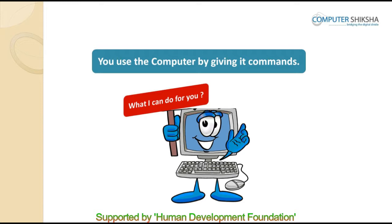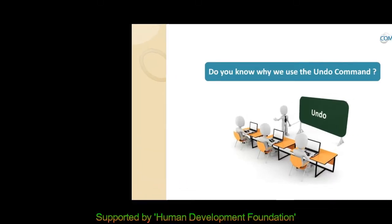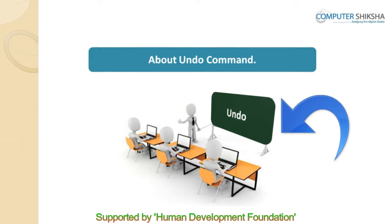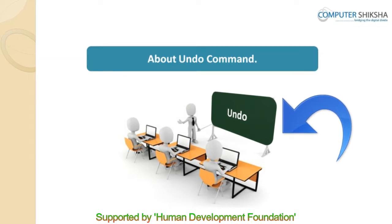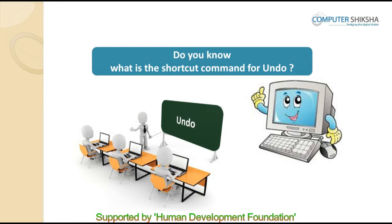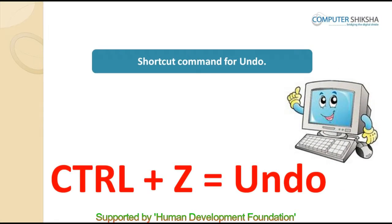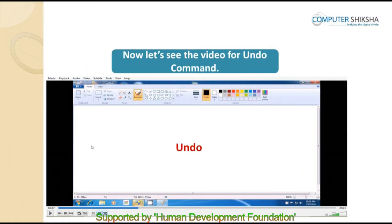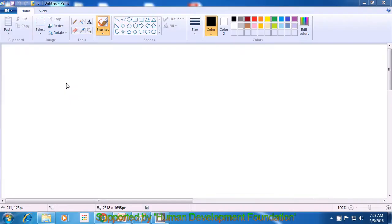Do you know why we use the undo command? Using the undo command, you can set right any mistakes that you might have made while drawing pictures in your MS Paint file. Do you know what is the shortcut command for undo? Control plus Z is the shortcut command for undo. We will now learn the use of the undo command by watching this video.